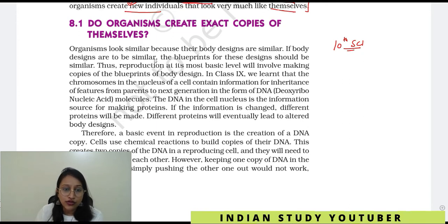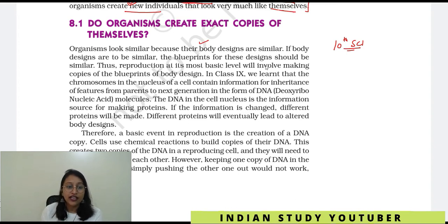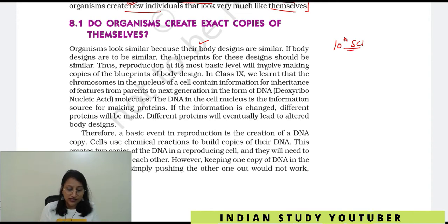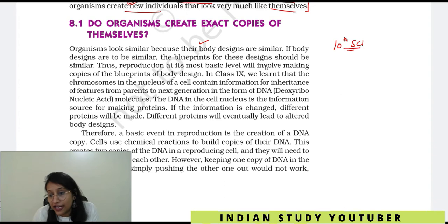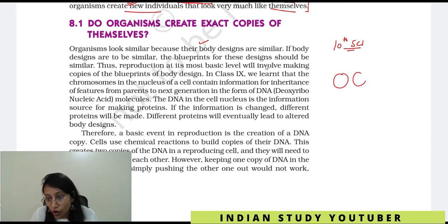The organisms look similar because their body designs are similar. If body designs are similar, the blueprints for these designs should also be similar — that means where they come from should be similar. Thus, reproduction at its most basic level will involve making copies of the blueprints of body design, and this individual's blueprint copy has been passed on.